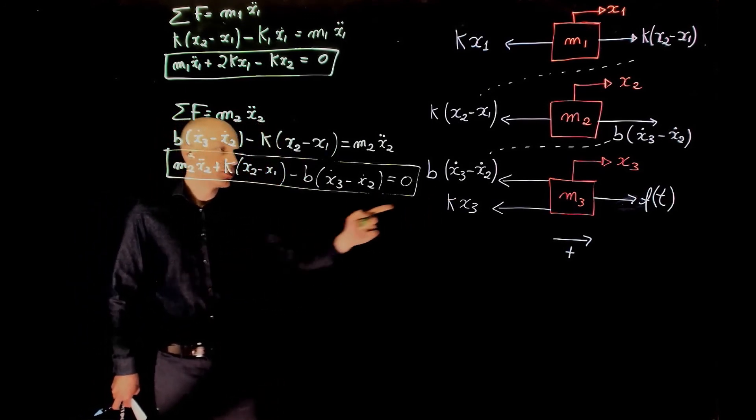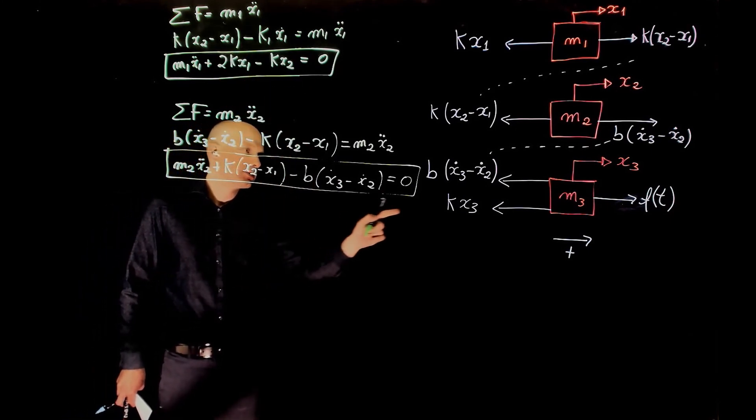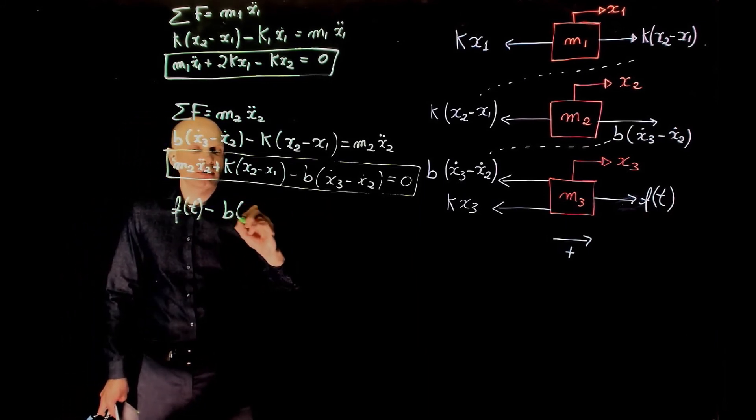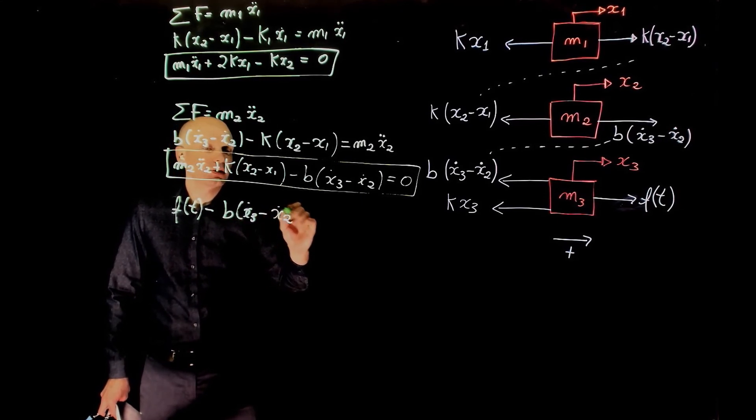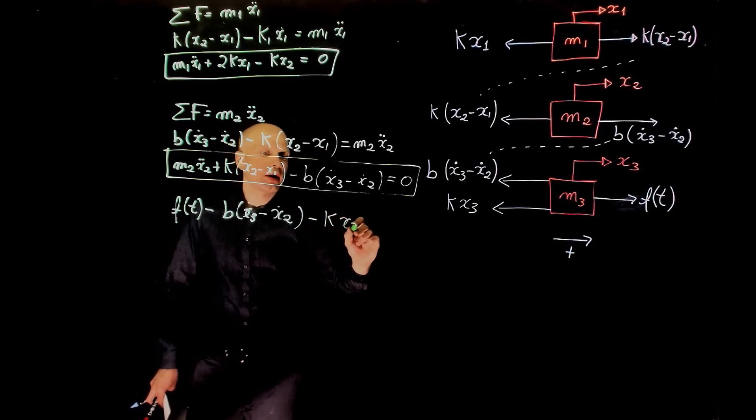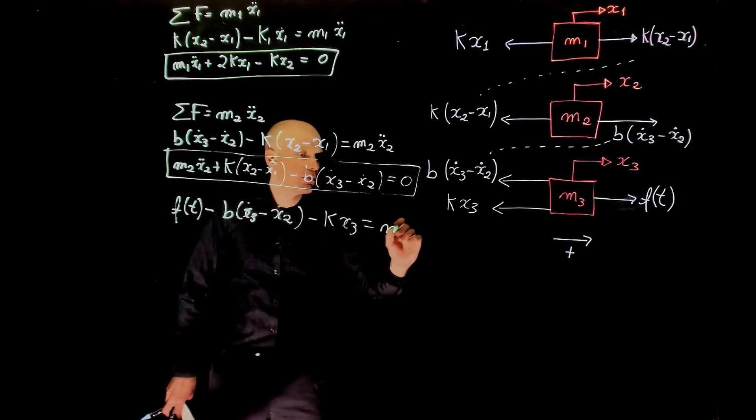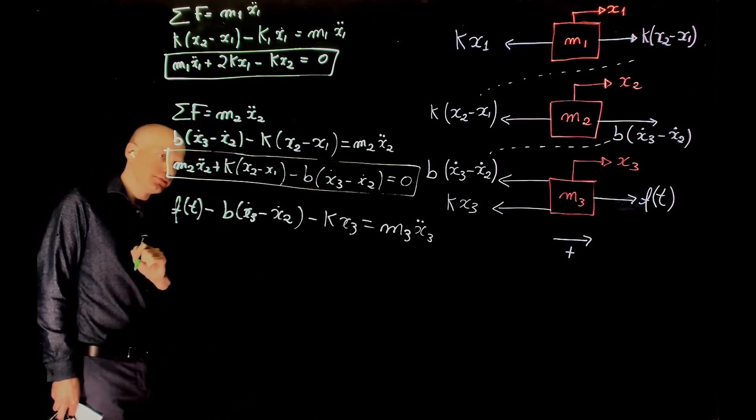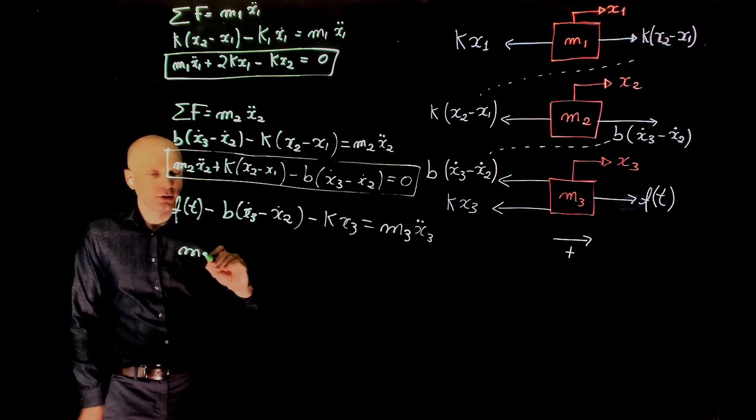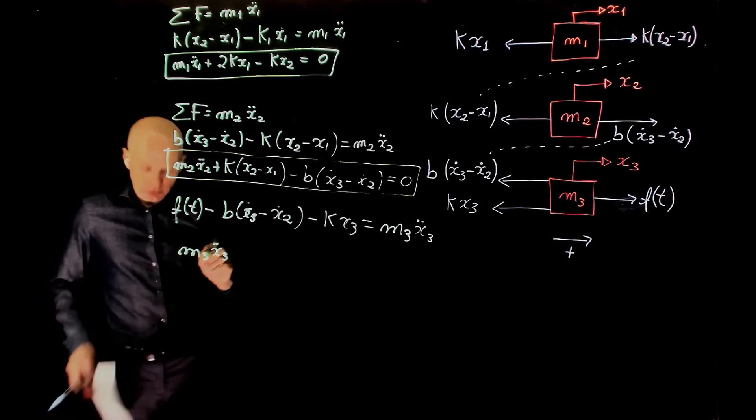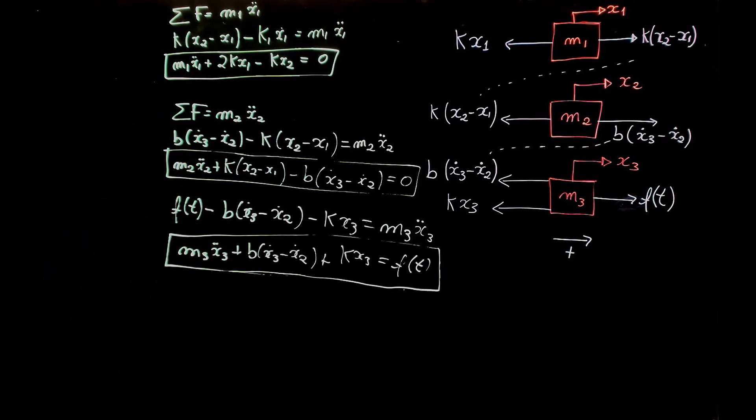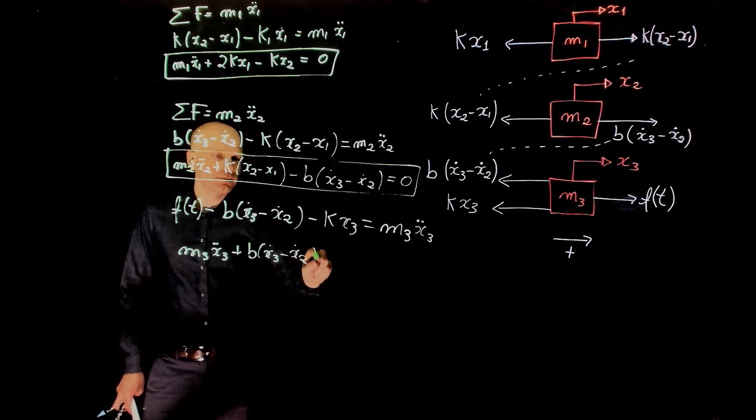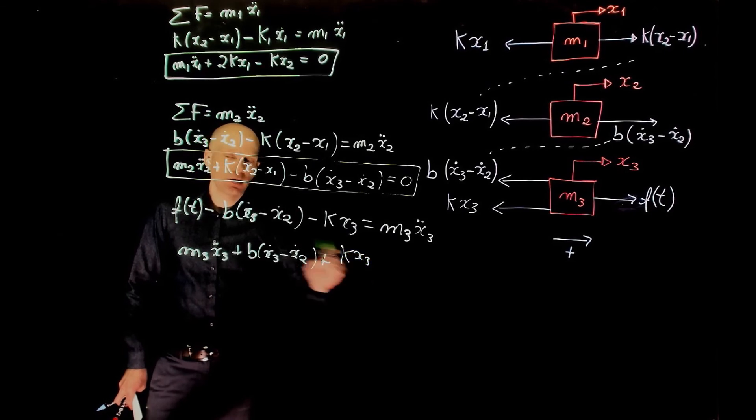And finally, mass 3, the sum of forces equals to m3 x3 double dot. And the sum of forces, in that case, we have f(t) minus b(x3 dot minus x2 dot) minus k x3 equals to m3 x3 double dot. And rearranging this equation, we have m3 x3 double dot plus b(x3 dot minus x2 dot) plus k x3 equals to f(t).